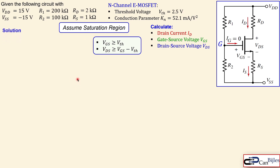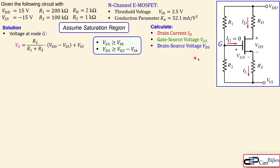We start at node G — a very handy starting point. The node voltage at G can be calculated using the voltage divider rule. We must be careful because now we have vss, which is not ground as in example one. The expression is: Vg = (R2 / (R1 + R2)) × (Vdd − Vss) + Vss. If vss were zero you would just get (R2 / (R1 + R2)) × Vdd.